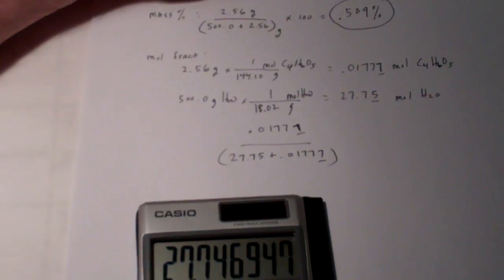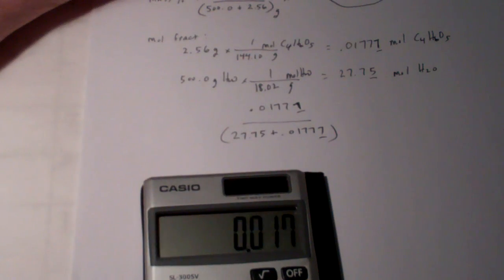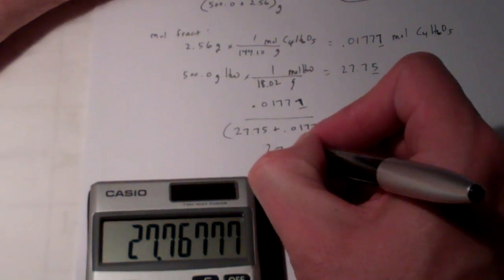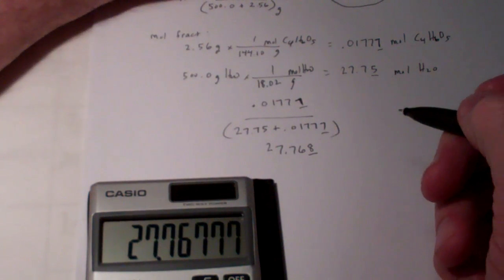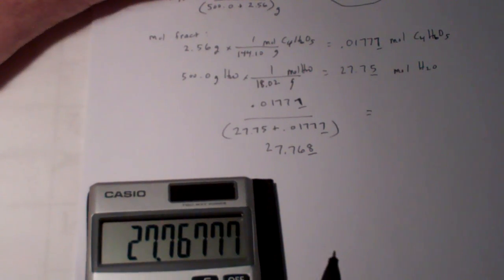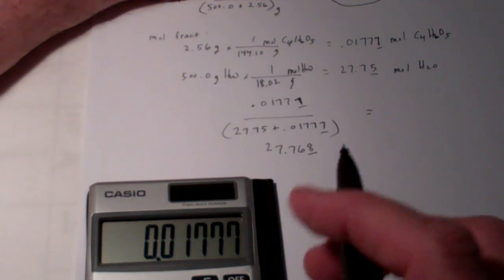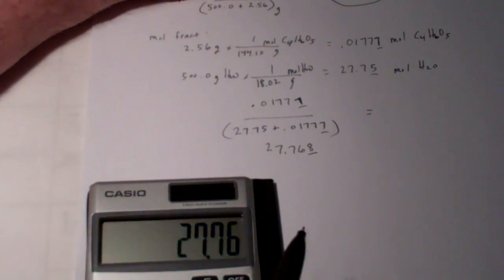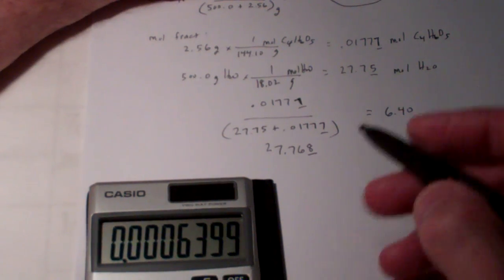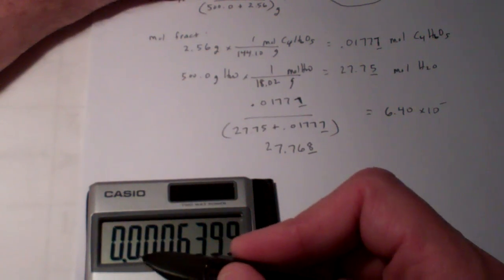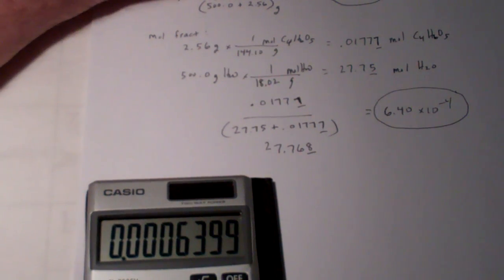The sum: 27.75 plus 0.01777 gives a total of 27.768 moles. Taking the numerator divided by the denominator: 0.01777 divided by 27.768 gives a mole fraction of 6.40×10⁻⁴, rounded to three significant figures. So the mole fraction of my solute is very, very small.